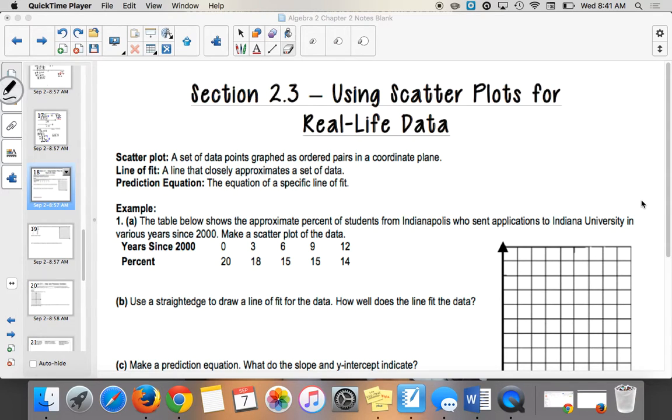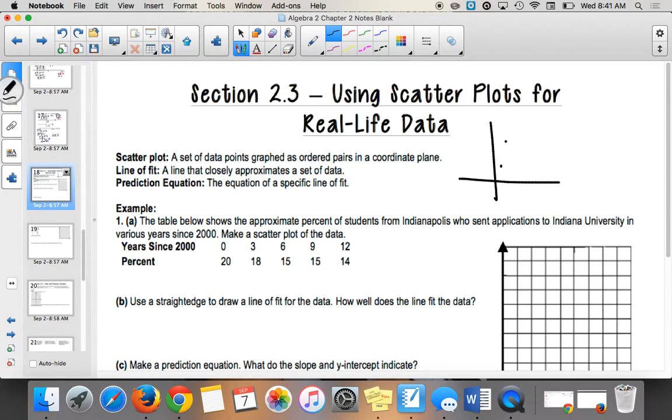Section 2.3 is using scatter plots for real life data. A scatter plot is just a set of data that are ordered pairs, just random points on your graph. A scatter plot can look something like this, where not all of them form a line, but maybe some of them are pretty close to a line.